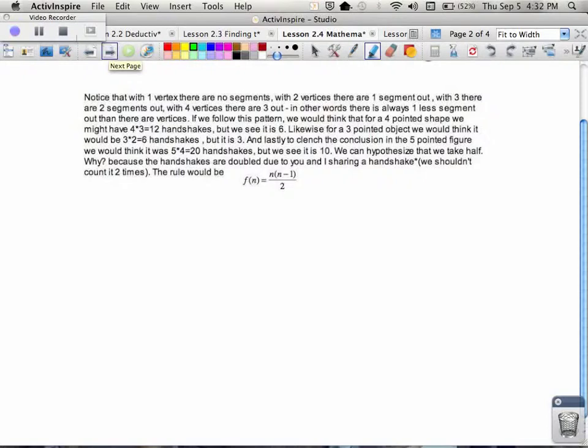But, what we find out is that with one vertex, there are no segments, with two vertices, there is one segment. Three, there are two. Four, there are three out. Or, in other words, there's always one less segment than there are vertices. And we think that for a four-point shape, you would have 12 handshakes, but we only see six. Likewise, for three, we think it should be six, but it's only three.